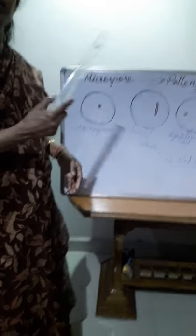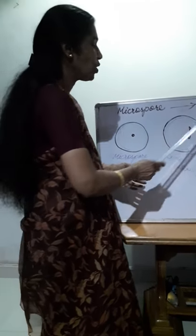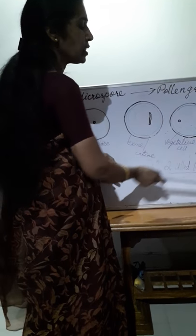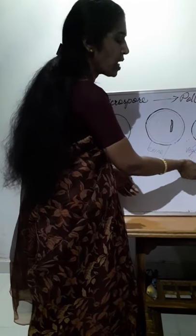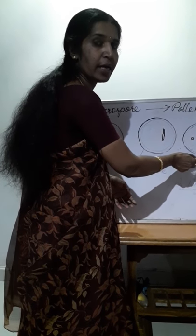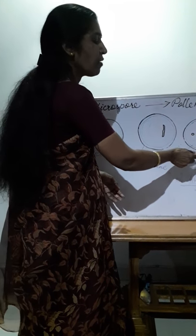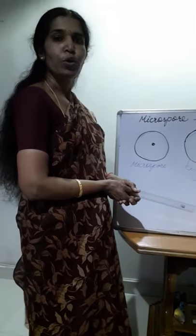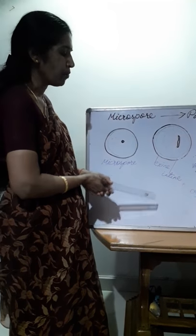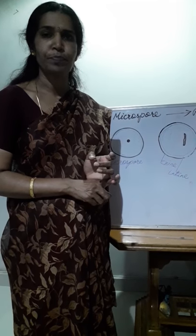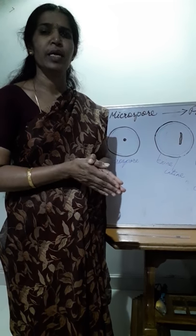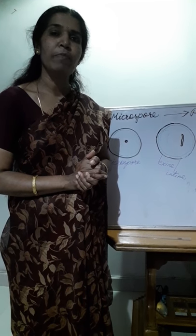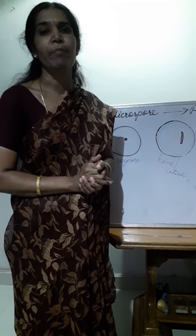We also learnt how the microspore matures into a pollen grain, forming two types of cells: vegetative and generative. In some plants, the generative cell divides into two male gametes before being shed from the anther. In other plants, the generative cell divides into two male gametes after the pollen lands on the stigma and the pollen tube grows. We also covered the importance of pollen and the allergic conditions it may cause in humans.